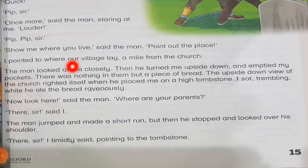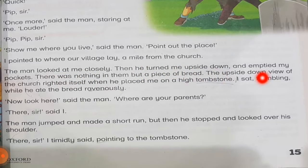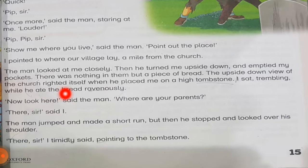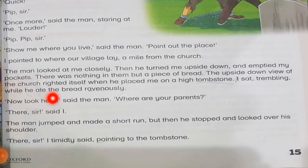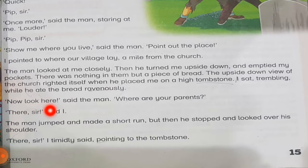'Show me where you live,' said the man. 'Point out the place.' I pointed to where our village lay, a mile from the church. The man looked at me closely, then he turned me upside down and emptied my pockets. There was nothing in them but a piece of bread. He placed me on a high tombstone. I sat trembling while he ate the bread ravenously — ravenously means hungrily. Clearly the prisoner was very hungry.